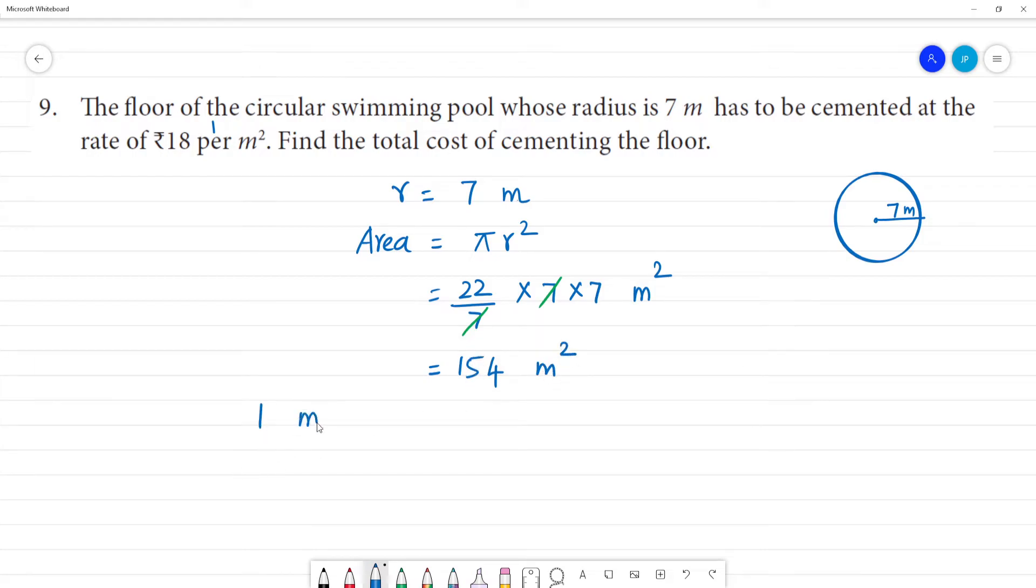1 meter square cost of cementing. Cost of cementing 1 meter square is equal to ₹18. So 154 meter square is equal to 154 multiplied by 18.